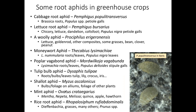Here's a list of root aphids I've most commonly encountered. Cabbage root aphid goes to roots of Brassicas — I've seen that on Iberis in nurseries. Lettuce root aphid has caused problems in hydroponic lettuce production. Woolly aphid Prociphilus erigeronensis has been seen in lettuce and outdoor plants like goldenrod and other composite plants. Moneywort aphid Tacabeus lysomachii is probably the most common one I've been getting complaints about — it's found in Lysimachia nummularia on roots and leaves. A poplar vagabond aphid often comes up as a question but I haven't actually encountered it.